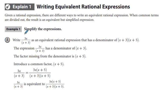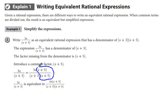Writing equivalent rational expressions, Example 1: write 3x over quantity x plus 3 as an equivalent rational expression with a denominator of x plus 3 times quantity x plus 5. We have the denominator x plus 3 already; the factor missing is x plus 5. So we multiply the numerator and denominator by x plus 5. Since x plus 5 over x plus 5 equals 1, we're not affecting the overall value. We end up with an equivalent expression, and that's how we get a common denominator.